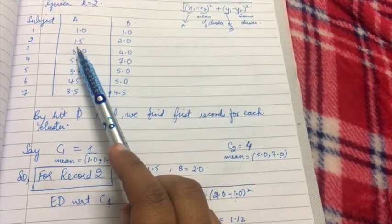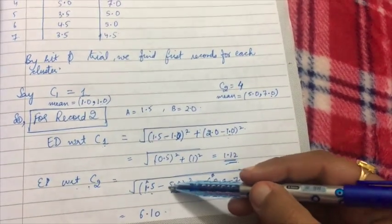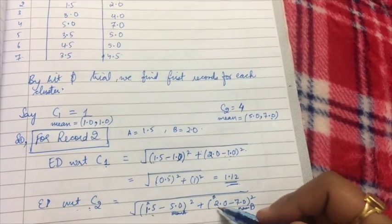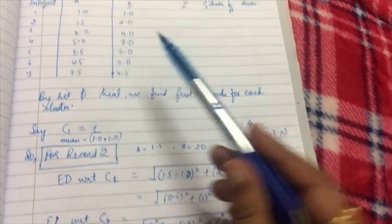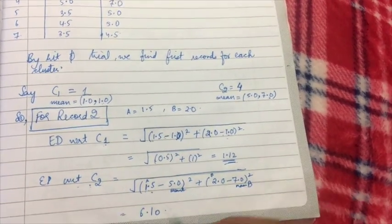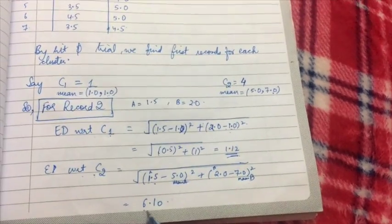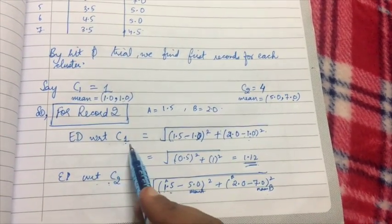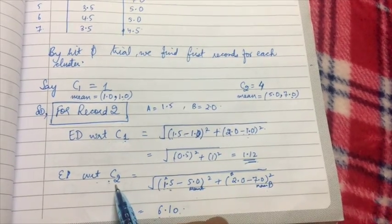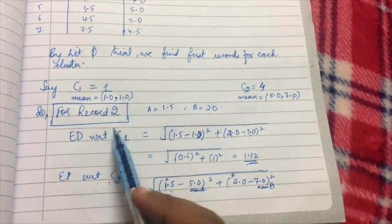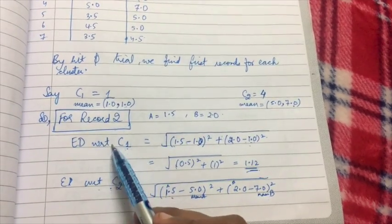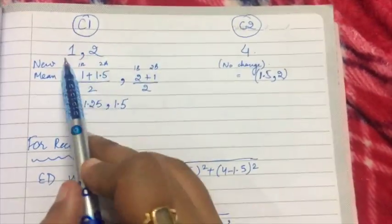The a value for record two is 1.5. The mean a of cluster two is 5.0 and mean b is 7.0. The b value for record two is 2, and the cluster mean b is 7. So the Euclidean distance of record two from C2 is 6.10. Since the Euclidean distance of record two from C1 (1.12) is less than from C2 (6.10), record two is more similar to cluster one, so I will put record two in cluster one.